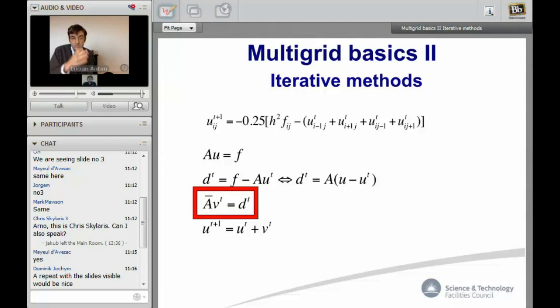This converges if the spectrum properties of the matrix A bar are good enough. But what was noticed for iterative methods which are approximation of the Laplacian and other differential operators is that as you increase the grid size the convergence rate decreases.